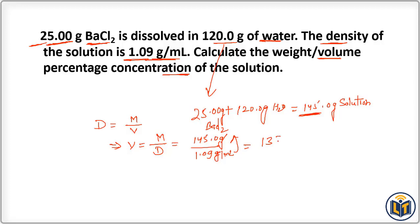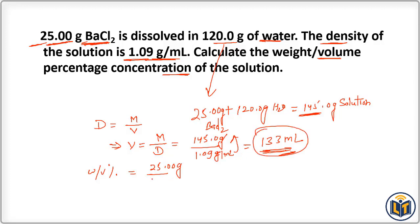Dividing 145.0 grams by 1.09 grams per ml — grams cancel out — gives us 133 ml as the volume of the solution. Now we can apply the formula. Weight by volume percentage equals mass of solute (BaCl₂) which is 25.00 grams, divided by the total volume of solution which is 133 ml, multiplied by 100.